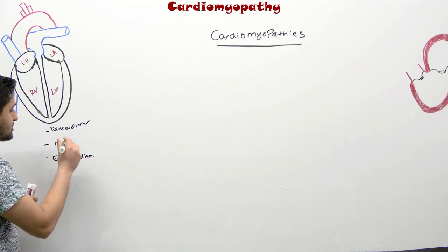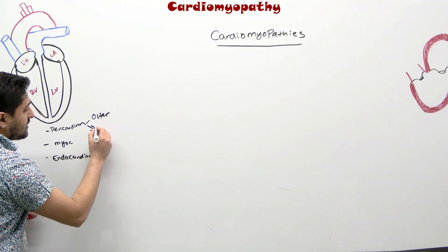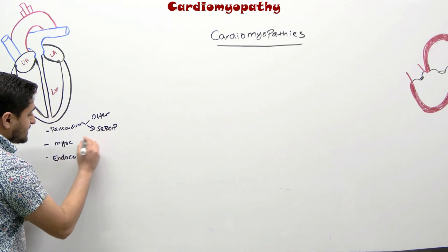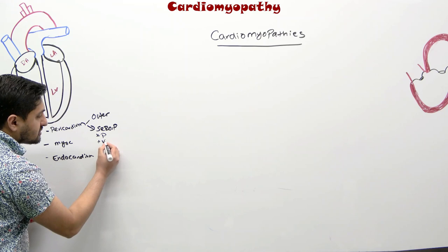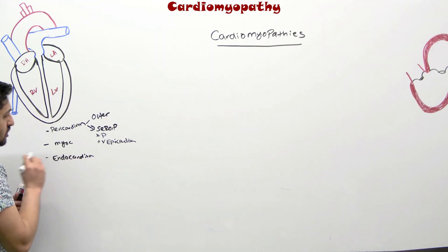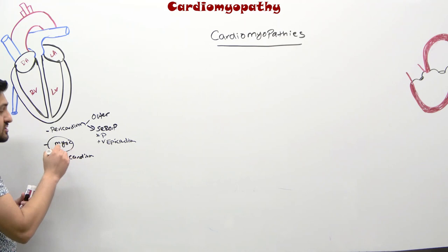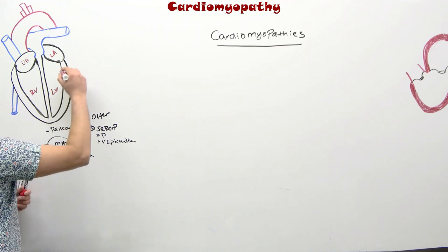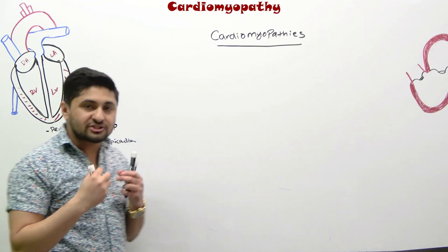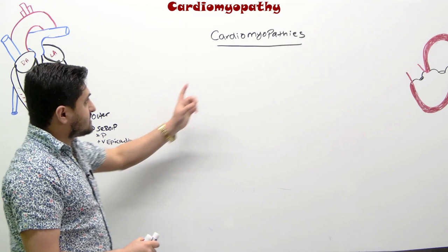Within the pericardium there are different layers: the outer fibrous pericardium, and then the inner or serous pericardium. The serous pericardium contains two layers — the parietal and the visceral pericardium, also called the epicardium. So basically, we're focusing on disorders that involve the myocardium, which is the contractile layer of the heart.